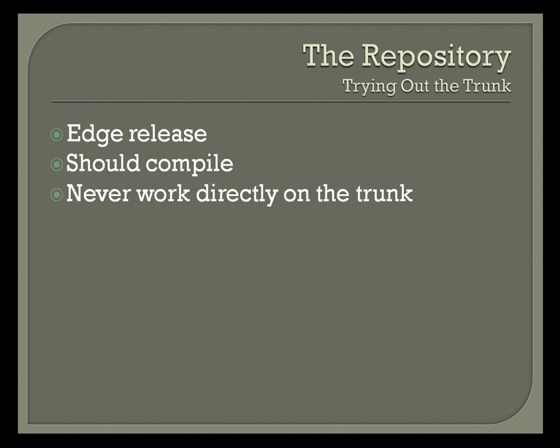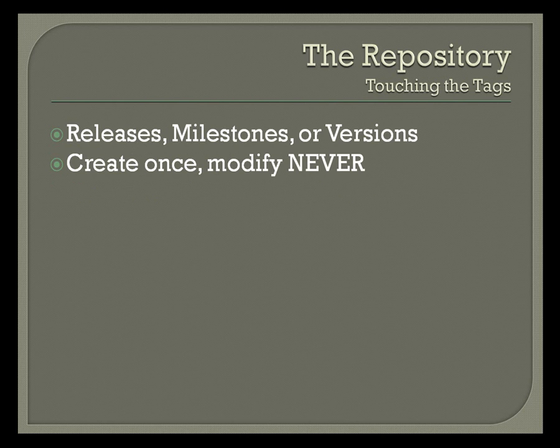In the trunk, you should have your edge release at all times — it should be compiling, working, and represent the most recent code that has been integrated, tested, and verified. It's a good idea never to work directly in your trunk. Tags are very convenient: you can create milestones, releases, or snapshots of the project at a given point in time. When you reach a milestone and integrate everything back into the trunk, you create a tag — an unmodified copy of the trunk at that moment. You create it once and never modify it; you should not work on a tag.